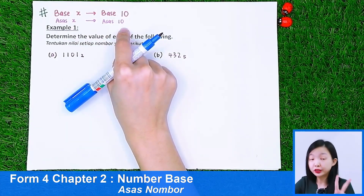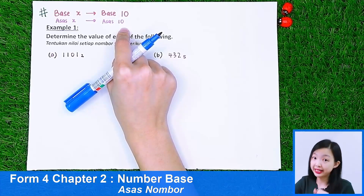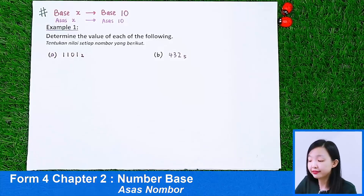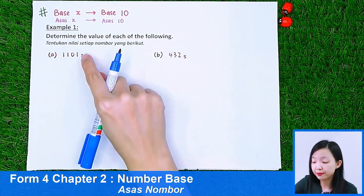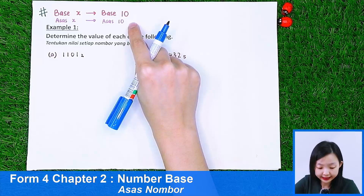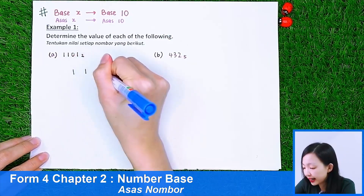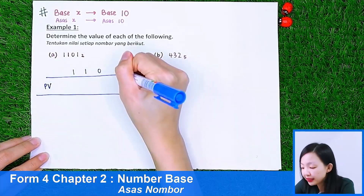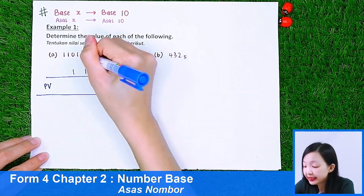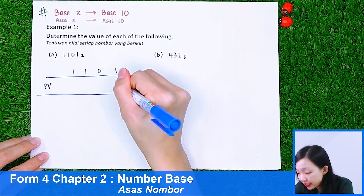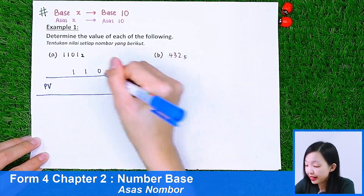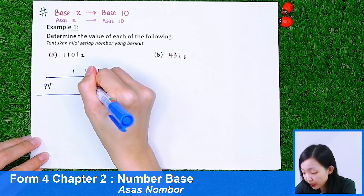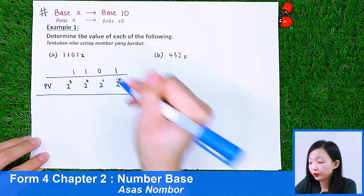Let us go to example one: determine the value of each of the following. We have to change base 2 to base 10. So I will write: 1, 1, 0, 1. Here are the place values. Since this is base 2, the place value of this rightmost 1 is 2 to the power of 0. The next is 2 to the power of 1. This will be 2 to the power of 2. This will be 2 to the power of 3.